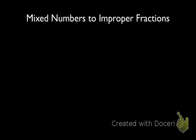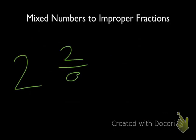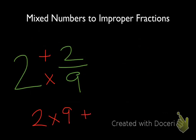Now let's learn how to change mixed numbers to improper fractions. Let's work with 2 and 2 ninths again. When we set up our mixed number fraction like this, an easy way to do that is to take our whole number, multiply it by our denominator, and then add that to the numerator. So that becomes 2 times 9 plus 2.